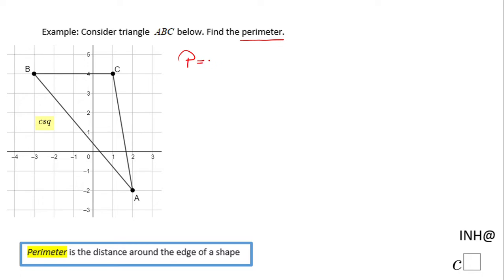We use the letter P for perimeter. The perimeter of this shape will be AB plus BC plus AC, the length of these three segments. The easiest one is segment BC because we can just count: one, two, three, four. This is four units.